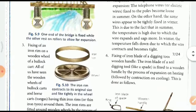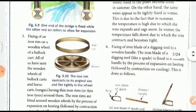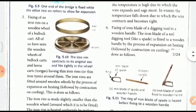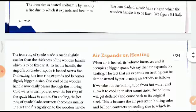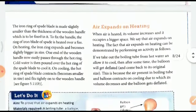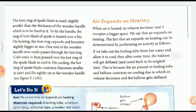The fixing of an iron blade of a digging tool to a wooden handle: the iron blade of a digging tool like a spade is fixed to a wooden handle by the process of expansion and then cooling. The ring is initially slightly shorter than the diameter of the wooden plank, heated so its diameter expands and fits onto the wood, then allowed to cool and it fixes securely.